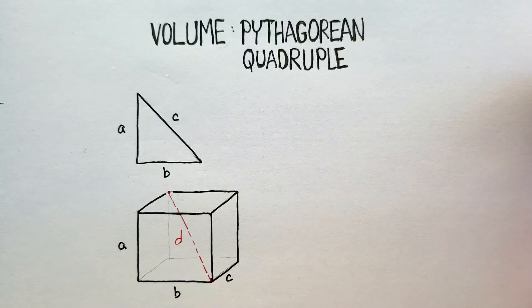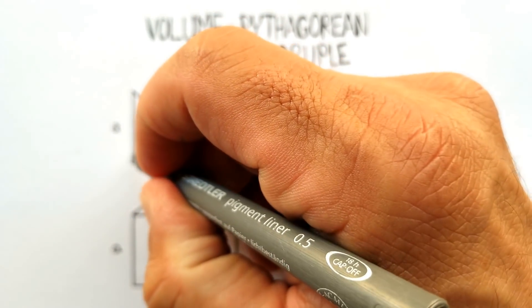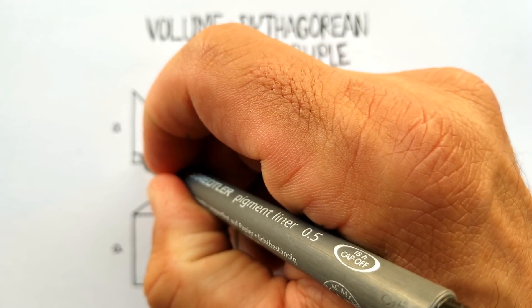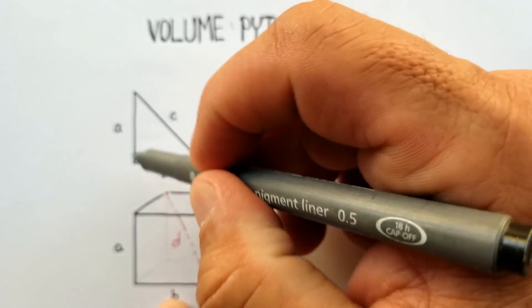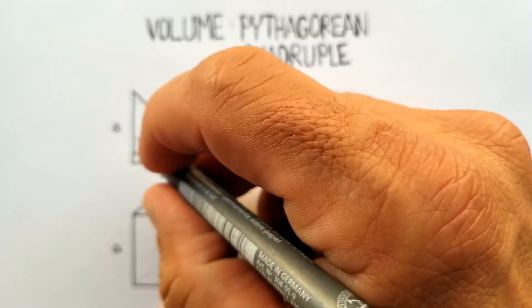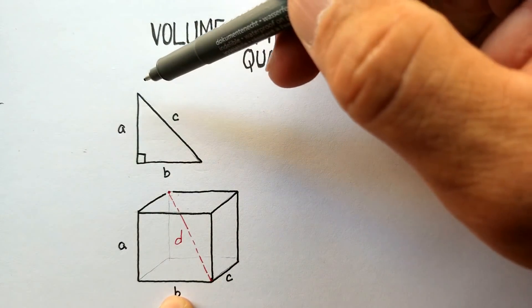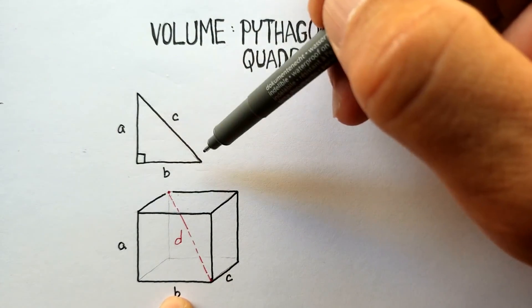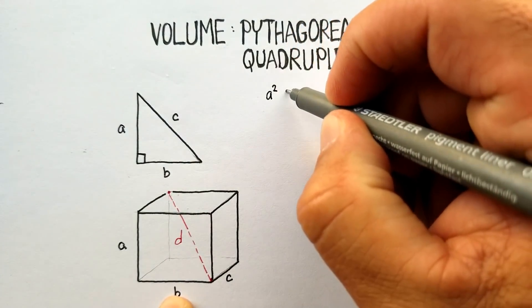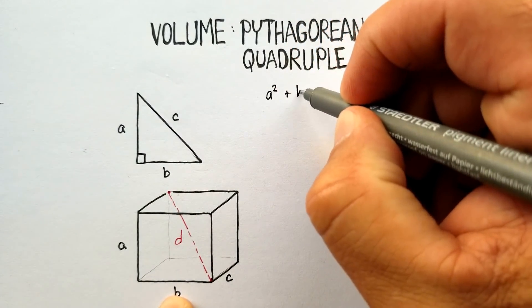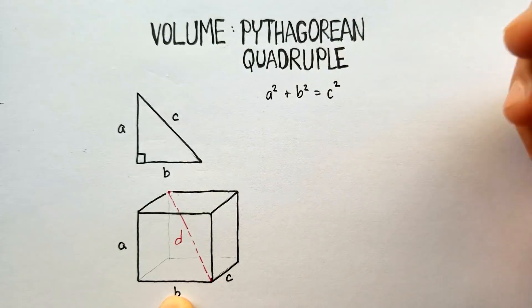What does the Pythagorean Theorem say? For a right triangle — and remember that a right triangle needs to have a 90-degree angle in it — the sum of the two sides, so a squared plus b squared, will be equal to the diagonal c squared. So: a² + b² = c².